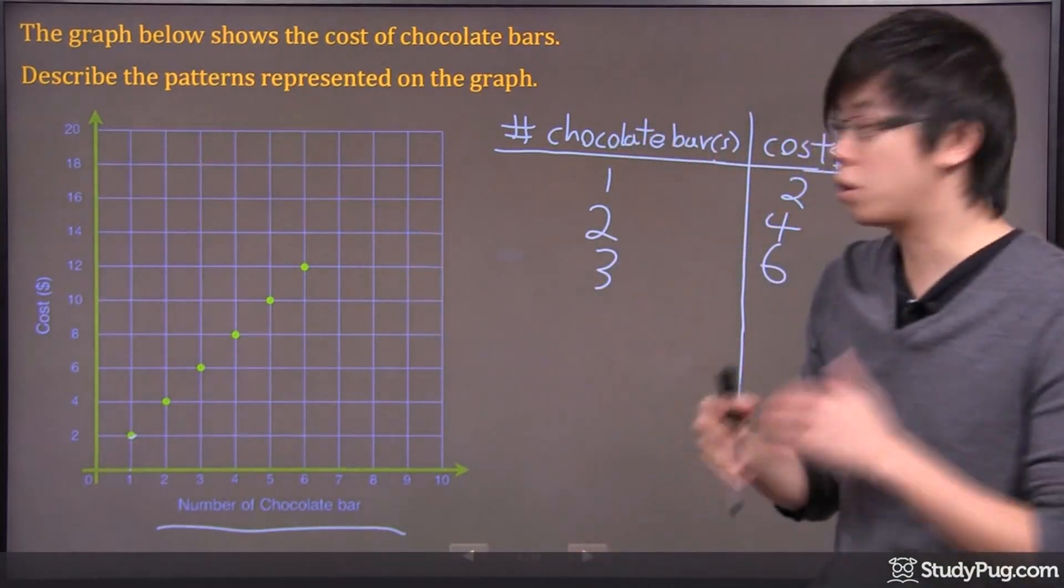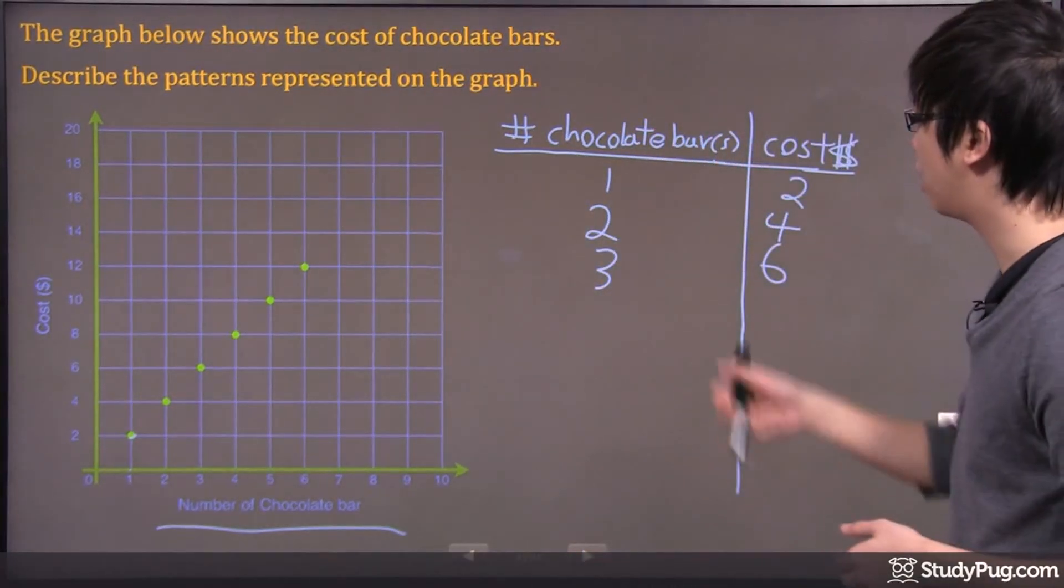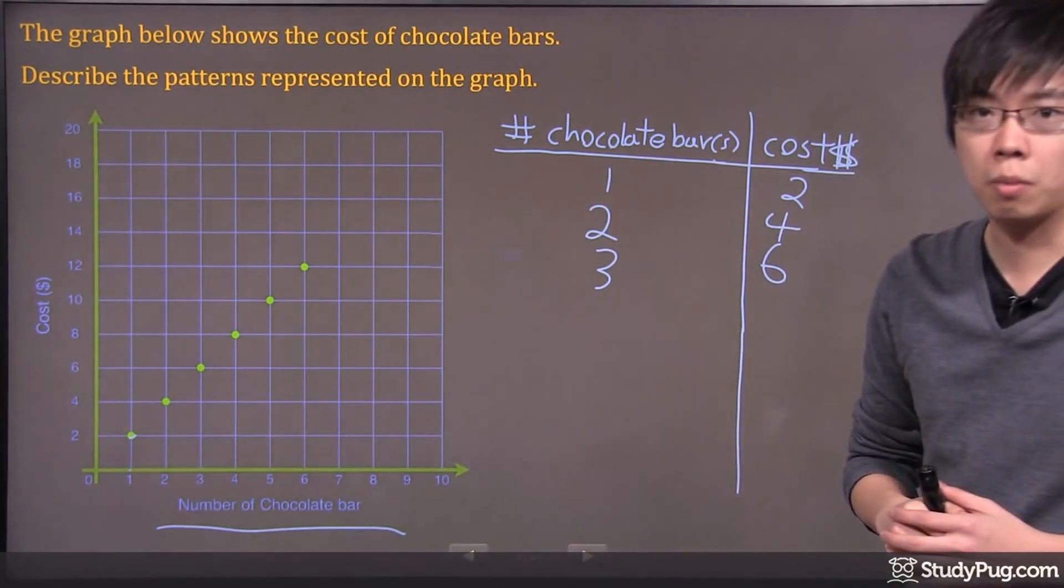What's the relationship or the pattern that's represented by this graph right here? Well, the pattern is that for every chocolate bar that you buy, it's a $2 increase.